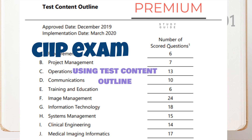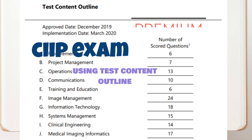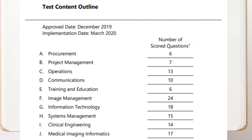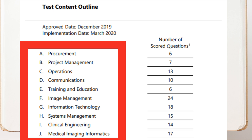The PACS Bootcamp premium IIP study guide is based on the American Board of Imaging Informatics, ABII, test content outline. The guide will build upon the March 2020 ABII outline by providing additional context to each subtopic. Individual topics from the content outline will be summarized into short and concise descriptions.